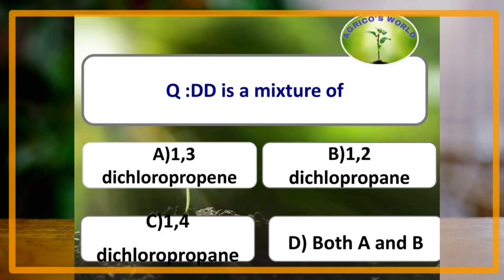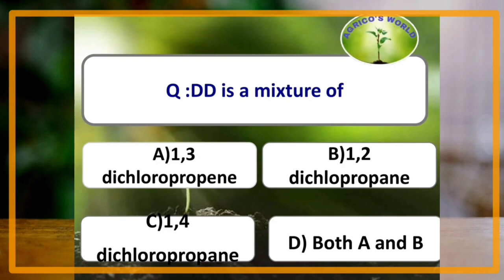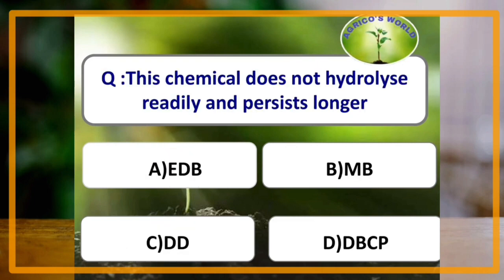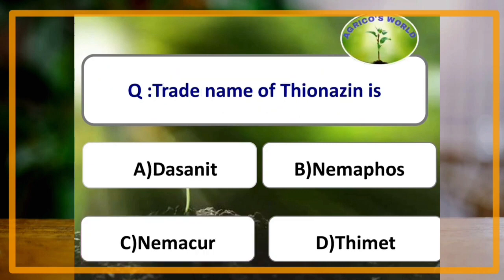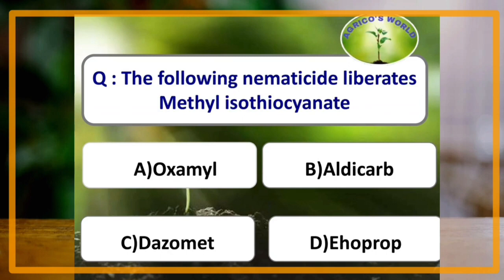DD is a mixture of 1,3-dichloropropene and 1,2-dichloropropane; this chemical does not hydrolyze readily and persists longer. The trade name of thionazine is Nemofos. Oxamyl is the nematicide that liberates methyl isothiocyanate.